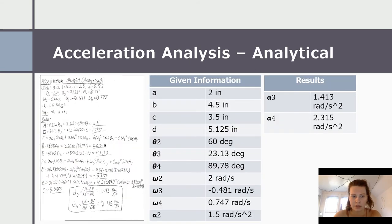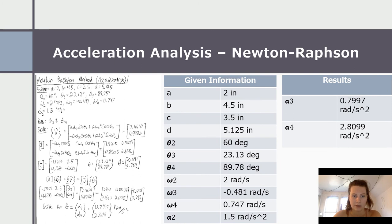This is the analytical analysis for acceleration for the entire cycle. We calculated alpha three at 1.413 radians per second squared and alpha four at 2.315 radians per second squared, with alpha two given at 1.5 radians per second squared, using class equations to calculate the A through E values. For the Newton-Raphson acceleration analysis using matrices, alpha three is 0.7997 radians per second squared and alpha four is 2.8099 radians per second squared, with alpha two at 1.5 radians per second squared.